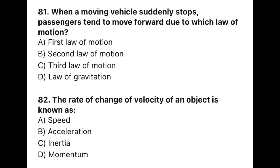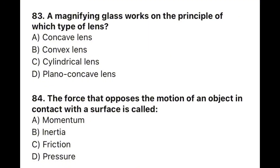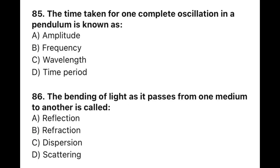Question 81: When a moving vehicle stops suddenly, passengers tend to move forward due to which law of motion? The correct option is A — first law of motion. Question 82: The rate of change of velocity of an object is known as — the correct option is B — acceleration. Question 83: A magnifying glass works on the principle of which type of lens? The correct option is B — convex lens. Question 84: The force that opposes the motion of an object in contact with a surface is called — the correct option is C — friction. Question 85: The time taken for one complete oscillation of a pendulum is known as — the correct option is D — time period.